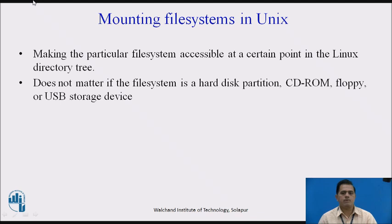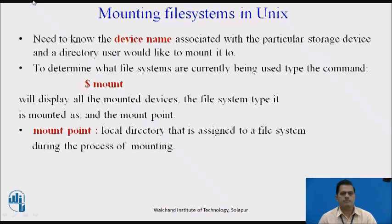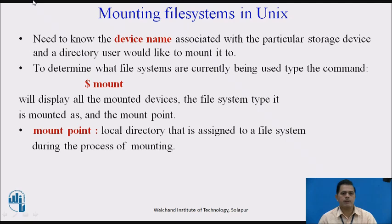For example, let us say that you have a website stored in the /usr/local/website directory. The website has become very popular and you are running out of space on your 36 GB hard drive. In order to determine what file systems are currently being used, type the command 'mount' at the dollar prompt. When you type this command at a command prompt, it will display all the mounted devices, the file system type it is mounted as, and the mount point. These are the three parameters when you type the mount command.